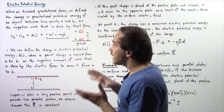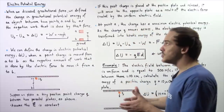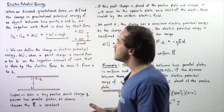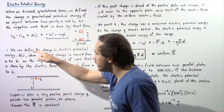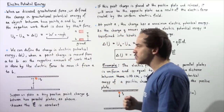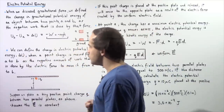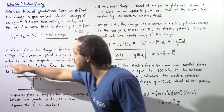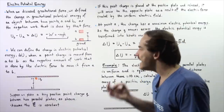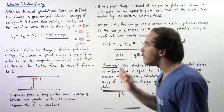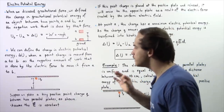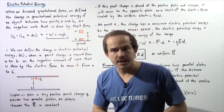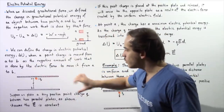The same concept of potential energy exists for electric forces, and this is called electric potential energy. We can define the change in electric potential energy when a point charge Q is moved from point A to point B as the negative amount of work done by that electric force to move that charge from A to B.